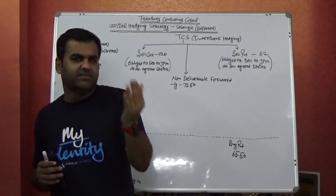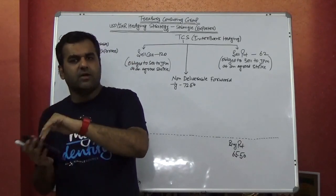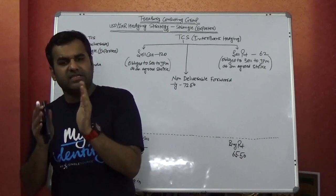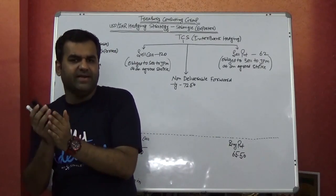But the difference is that seagull in practical terms is a 5-leg strategy. Theoretically, it is 3-leg. So 1 is the buy-side and 2 is the sell-side, or 1 is the sell-side and 2 is the buy-side.